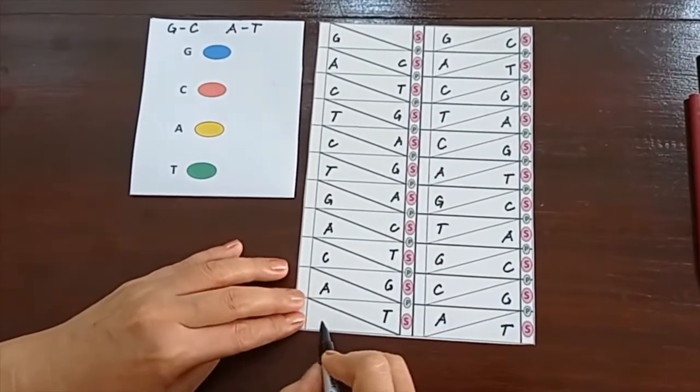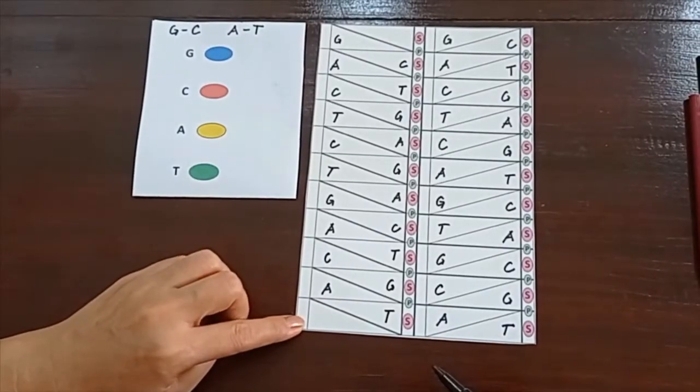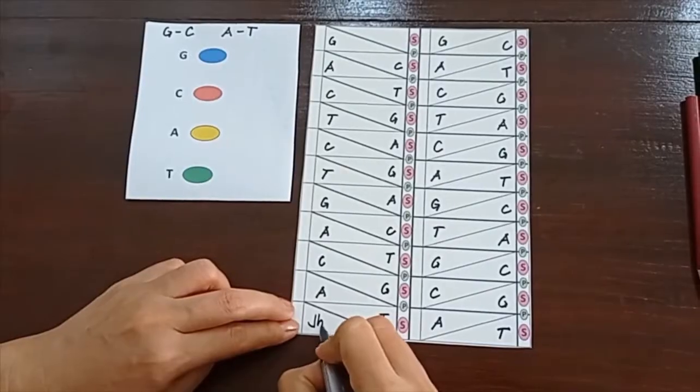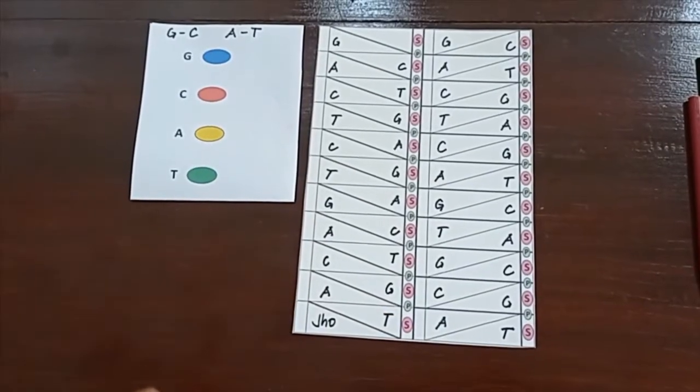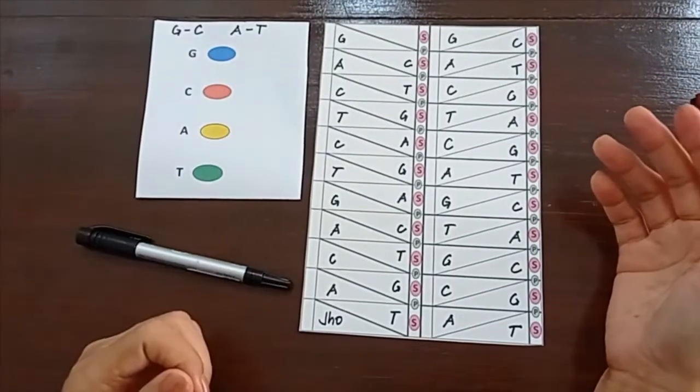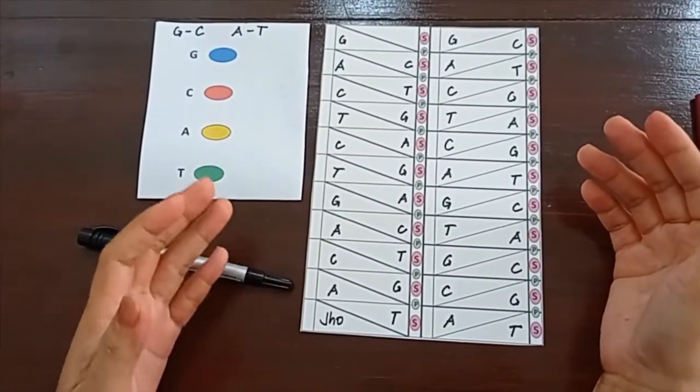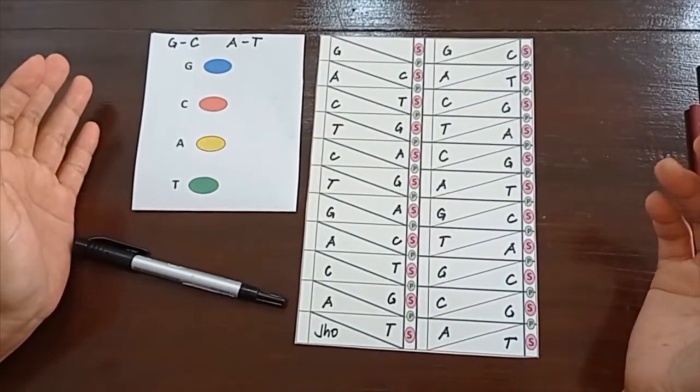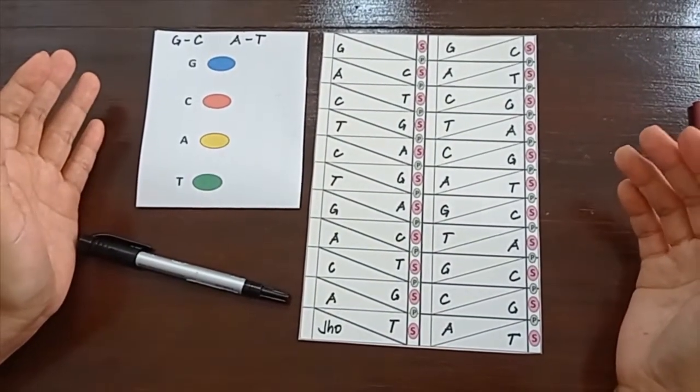At an empty space down here, you can write your name. So, I will write mine here, Jo. Make sure you become consistent with the base pairing rule. Now, it is time for us to add aesthetic value to our template. What we are going to do is to color this one.